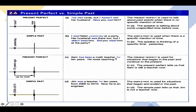'Sam has been a math teacher for 10 years. He loves teaching.' We use the present perfect for an action that started in the past — 10 years ago — and continues until now. Sam started teaching 10 years ago and is still a teacher, so we use the present perfect.